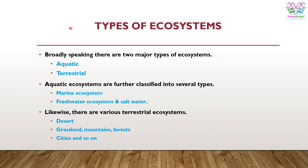The question comes to mind: how many types of ecosystems are there in this world? Broadly speaking, there are two major types of ecosystem — one is aquatic, and the other is terrestrial. Both are further grouped into different types. For example, aquatic ecosystems include marine, freshwater, and saltwater ecosystems. Terrestrial ecosystems include desert, grassland, mountains, forest, cities, and so on.